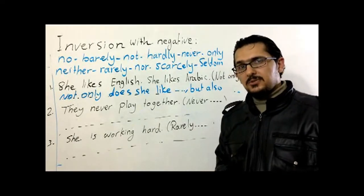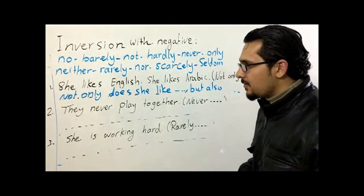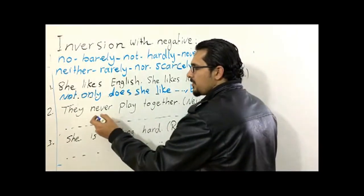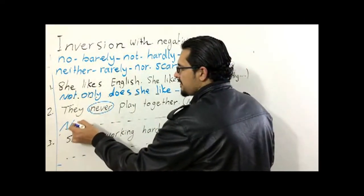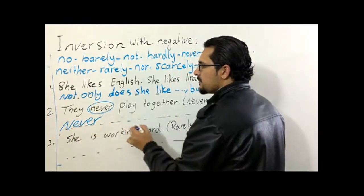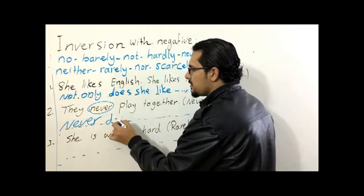Yeah, when we are going to put it in the beginning of the sentence like this, never, we have to use do. Never do they play together. Remember, don't forget about this thing.